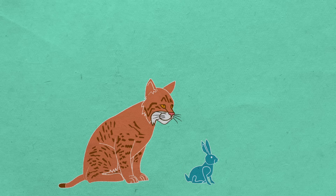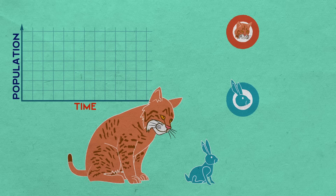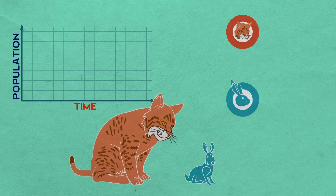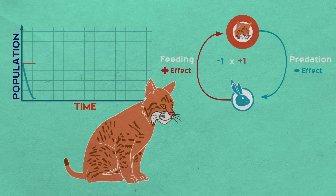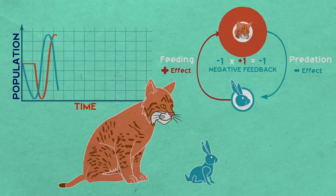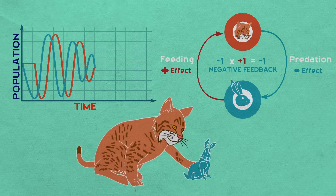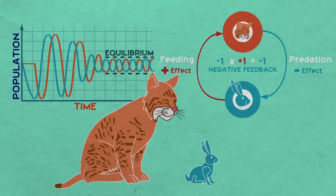In contrast, negative feedback diminishes or counteracts changes in an ecosystem to maintain a more stable balance. Consider predators and their prey. When lynx eat snowshoe hares, they reduce their population. But this drop in the lynx's food source will soon cause their own population to decline, reducing the predation rate and allowing the hare population to increase again. The ongoing cycle creates an up-and-down, wave-like pattern, maintaining a long-term equilibrium and allowing a food chain to persist over time.